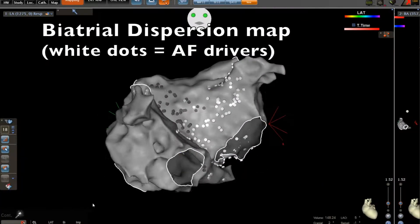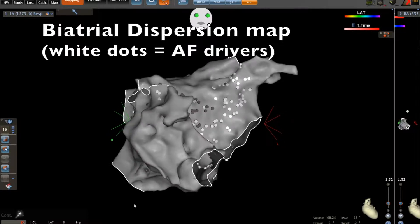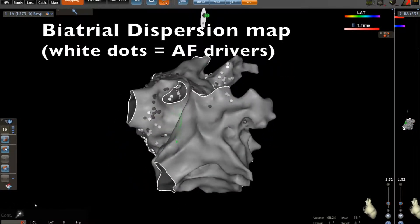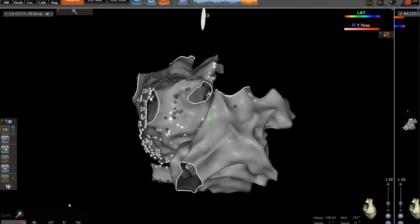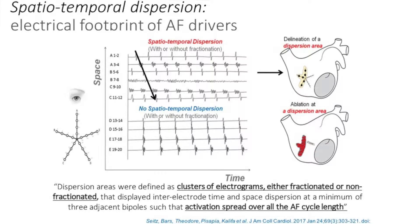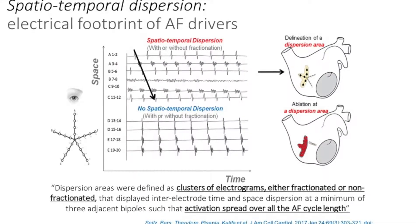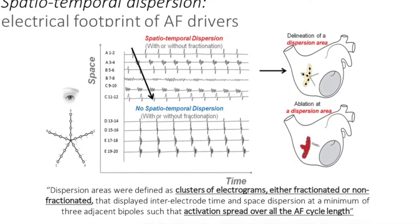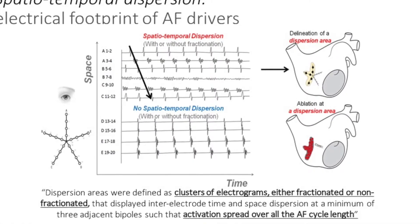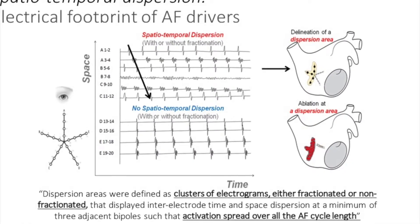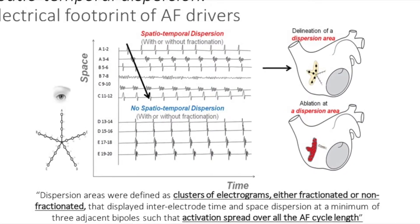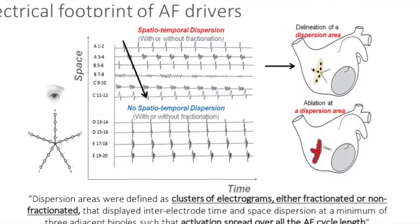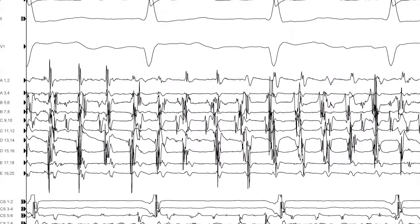Spatio-temporal dispersion is the electrical signature of AF drivers. Dispersion areas are defined as clusters of electrograms, either fractionated or non-fractionated, that display inter-electrogram time and space dispersion at a minimum of three adjacent bipoles, such that the activation spreads over all the AFib cycle length.